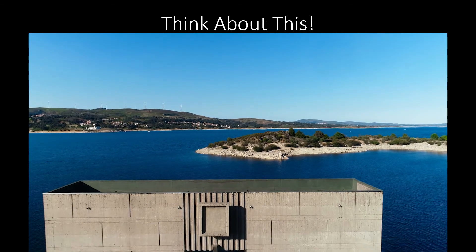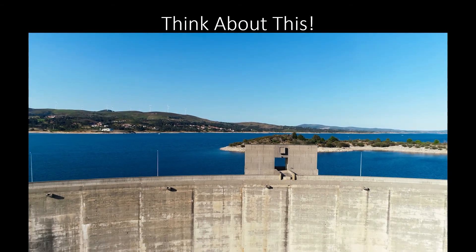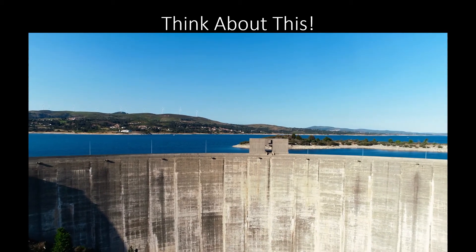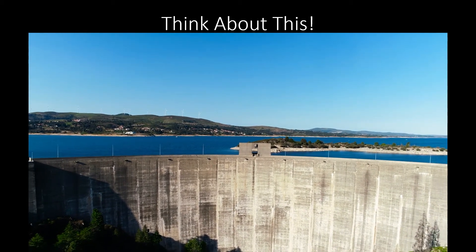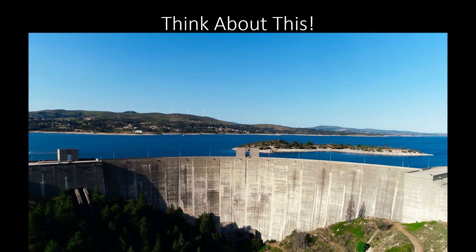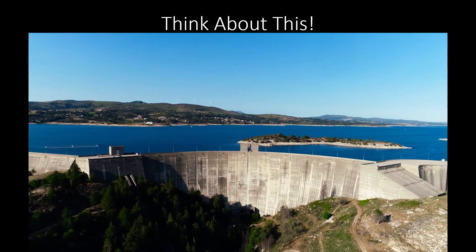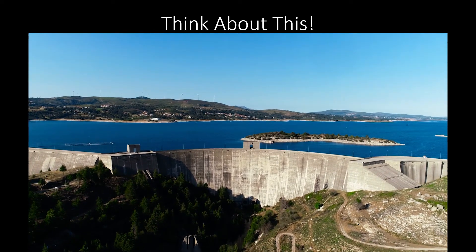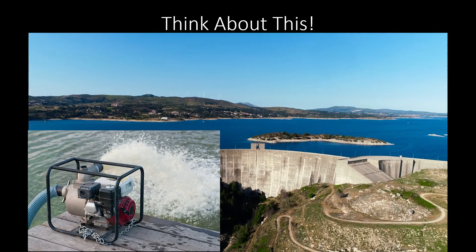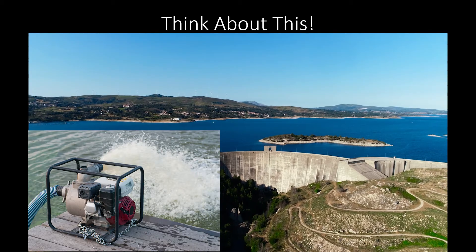Think about this: passive transport is sort of like a dam. The substance that wants to move — consider this the lake — is blocked by the plasma membrane, or the dam. The substance wants to move down its concentration gradient, much like the water in the lake wants to move downstream. But it can only do this through ion channels or carrier proteins, just like the gates of that dam that slowly let water through. However, what if you wanted to move water from the stream below back into the lake above the dam? For that, you would need a pump that uses energy to move water against gravity — that is the same as active transport, which we'll look at next.